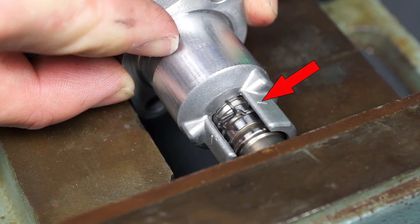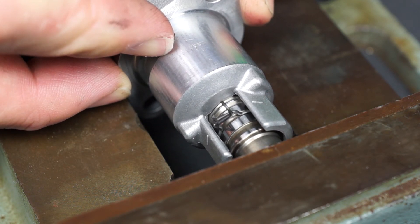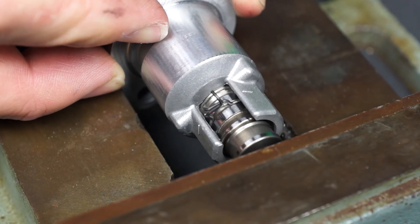Make sure the clip is in the proper tensioner rod groove and should be aligned with the arrows on the housing. You can now slowly release pressure on the vice and make sure the tensioner rod stays locked in the retracted position.